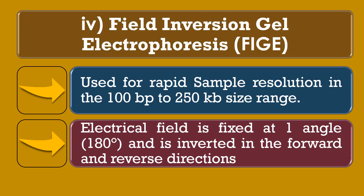The fourth type is Field Inversion Gel Electrophoresis, or FIGE. FIGE is used for rapid sample resolution in the 100 bp to 250 kb size range. In FIGE, the electrical field is fixed at one angle — that is 180 degrees — and is inverted in the forward and reverse directions.